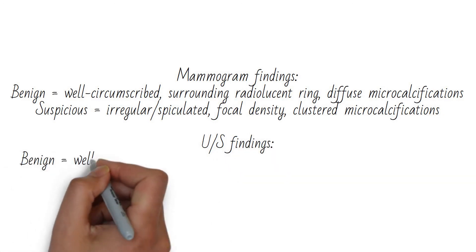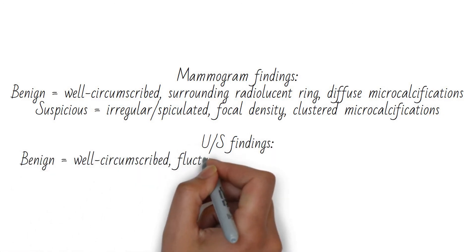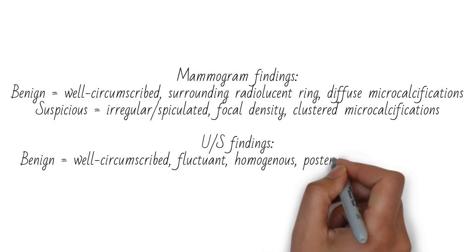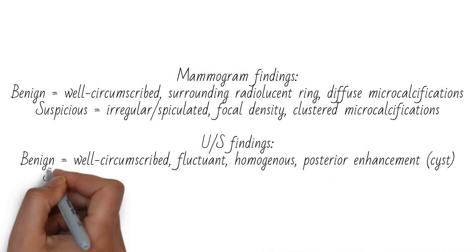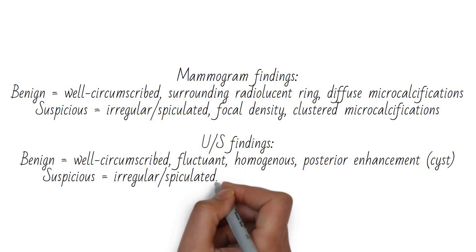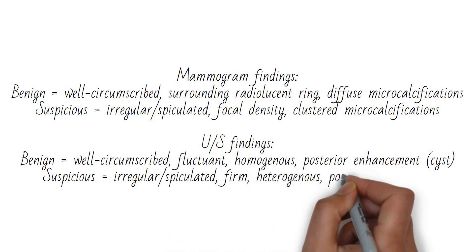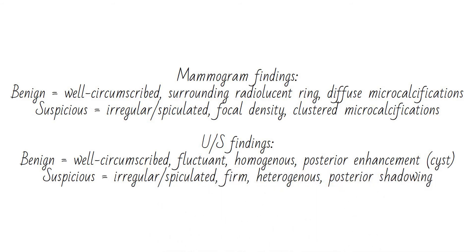On ultrasound, benign findings are a well-circumscribed fluctuant homogeneous posterior enhancing mass such as a cyst. Suspicious findings include an irregular or spiculated firm heterogeneous mass with posterior shadowing.